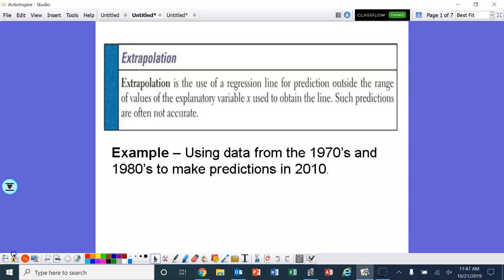let's review two words that we've talked about previously. First one is extrapolation. Remember, this is predicting outside the range of values given by your least squares regression line. And again, such predictions are often not accurate. Another example, if we use data from the 70s and 80s to make predictions about things in the 2000s or 2010s, it's probably not going to be accurate.